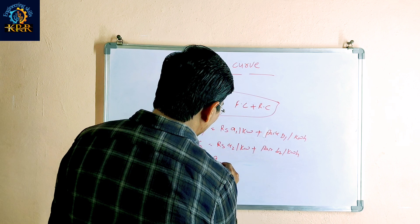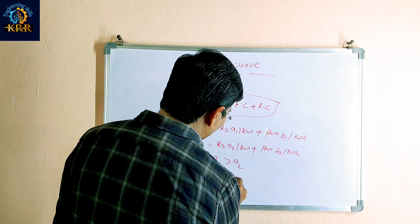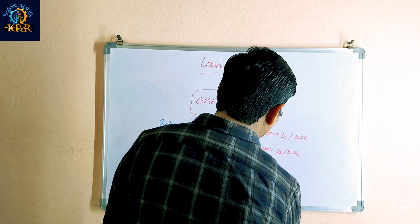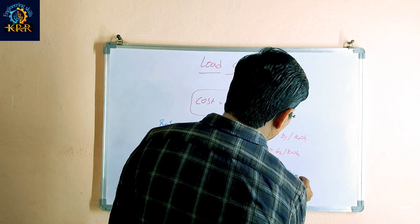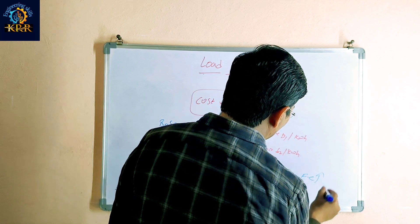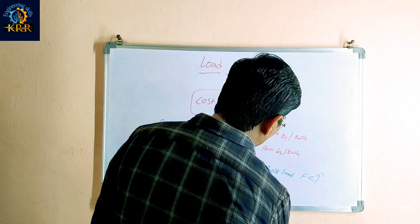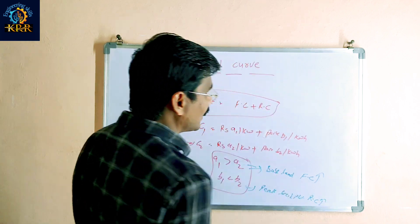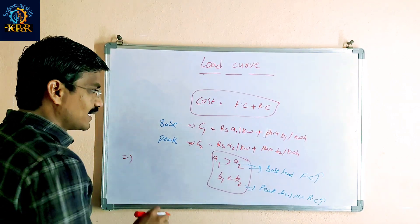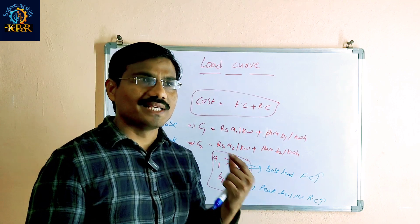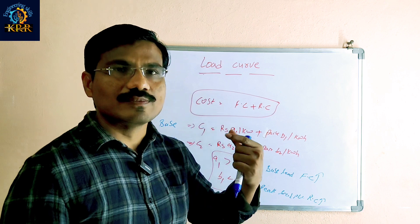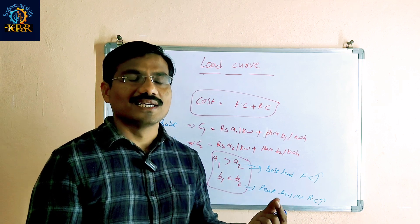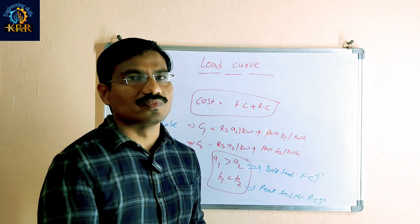In the base load cost equation: A1 is greater than A2, and B1 is less than B2. In base load plants, the fixed cost is more and the running cost is less. In peak load plants, the fixed cost is less and the running cost is more.